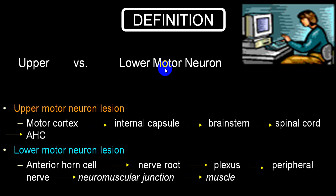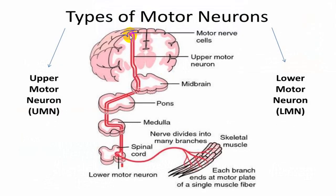The neuronal cells in the pre-central gyrus or motor cortex — their fibers are called upper motor neuron. These travel as corona radiata, then through the internal capsule, and descend in the brainstem through midbrain, pons, and medulla. At the lower part of medulla, 90 percent of the fibers cross to the opposite side and 10 percent remain on the same side. They end in the anterior horn cell. Fibers from the anterior horn cell through the anterior nerve root, spinal nerve, plexus, peripheral nerve up to the myoneural junction are the lower motor neuron.